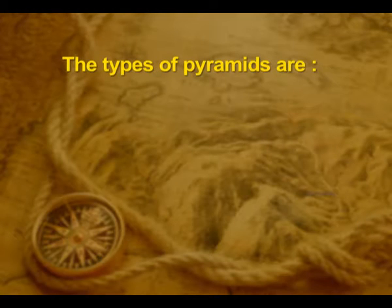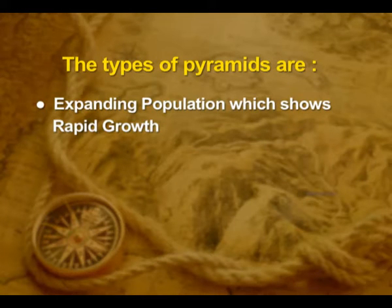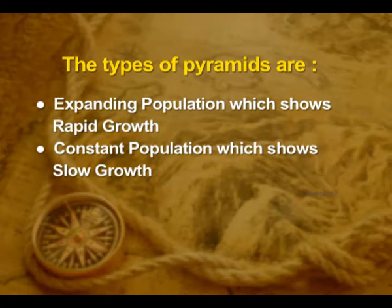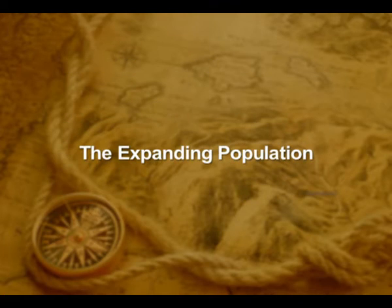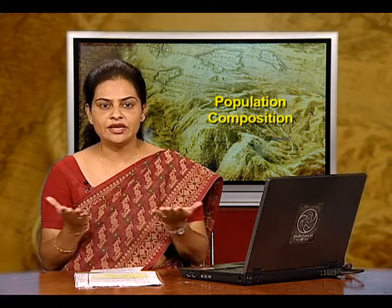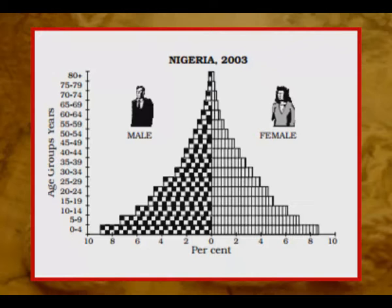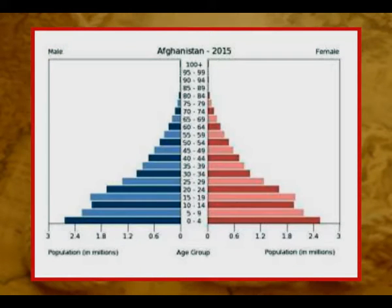There are three types of population pyramids: expanding population, which shows rapid growth; constant population, which shows slow growth; and declining population, which shows negative growth. The expanding population displays a distinctive triangular pyramid with a wide base, typical of developing countries, showing a high birth rate and a high death rate. The pyramids of Nigeria's 2003 census and Afghanistan's 2015 census illustrate this type.